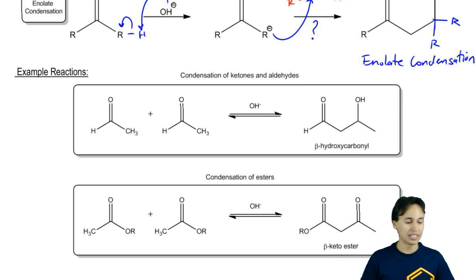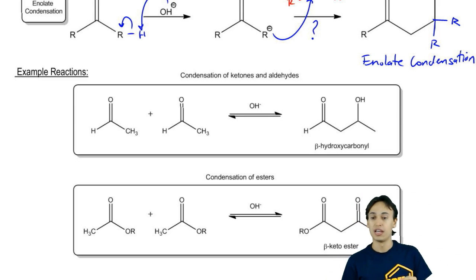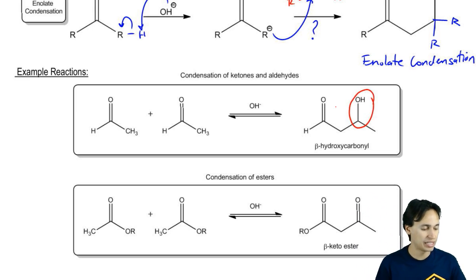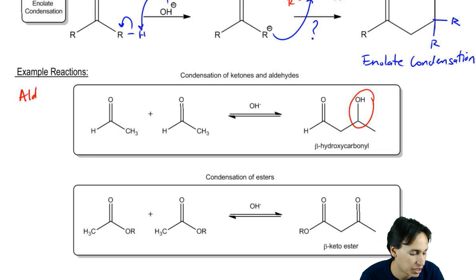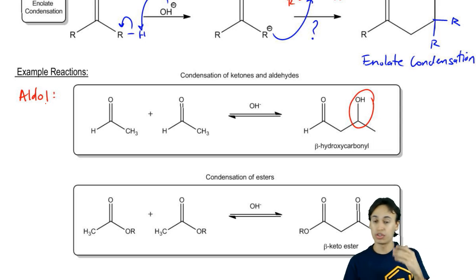It turns out that ketones and aldehydes can combine together to make molecules that have alcohol components and carbonyl. This reaction in particular is called an aldol reaction. The reason being that, as we'll see more later,